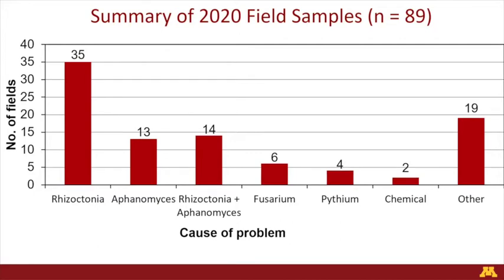Just looking at samples from 2020, most of the samples actually were Rhizoctonia. We did get some samples for Aphanomyces — about 13. We got about 89 samples in total. It's always common to recover both Rhizoctonia and Aphanomyces from the same root or different roots from the same field. The number of samples for Fusarium went a little bit lower in 2020 — about 11 samples — and that had been a red flag in 2019 because the only thing we can do for Fusarium right now is selecting a tolerant or resistant variety. My point here is: when you see something wrong in your field, please send your samples. We will be doing this diagnosis again in 2021.